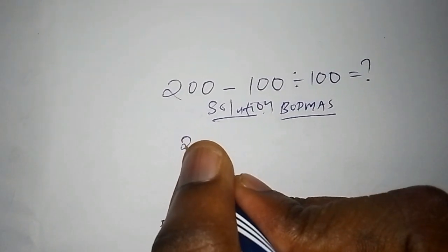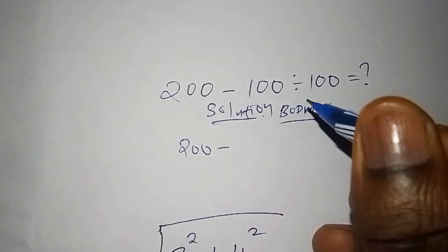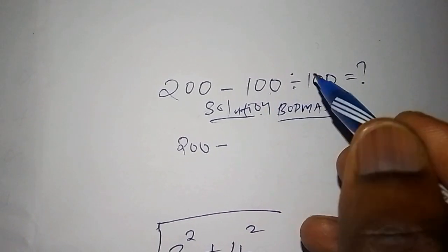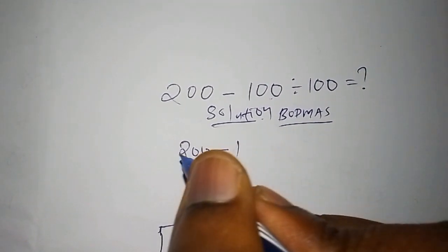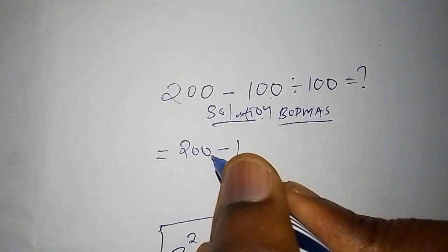So we shall have 200 subtract from 100 divided by 100, which gives us 1. So this equals 200 subtract 1.